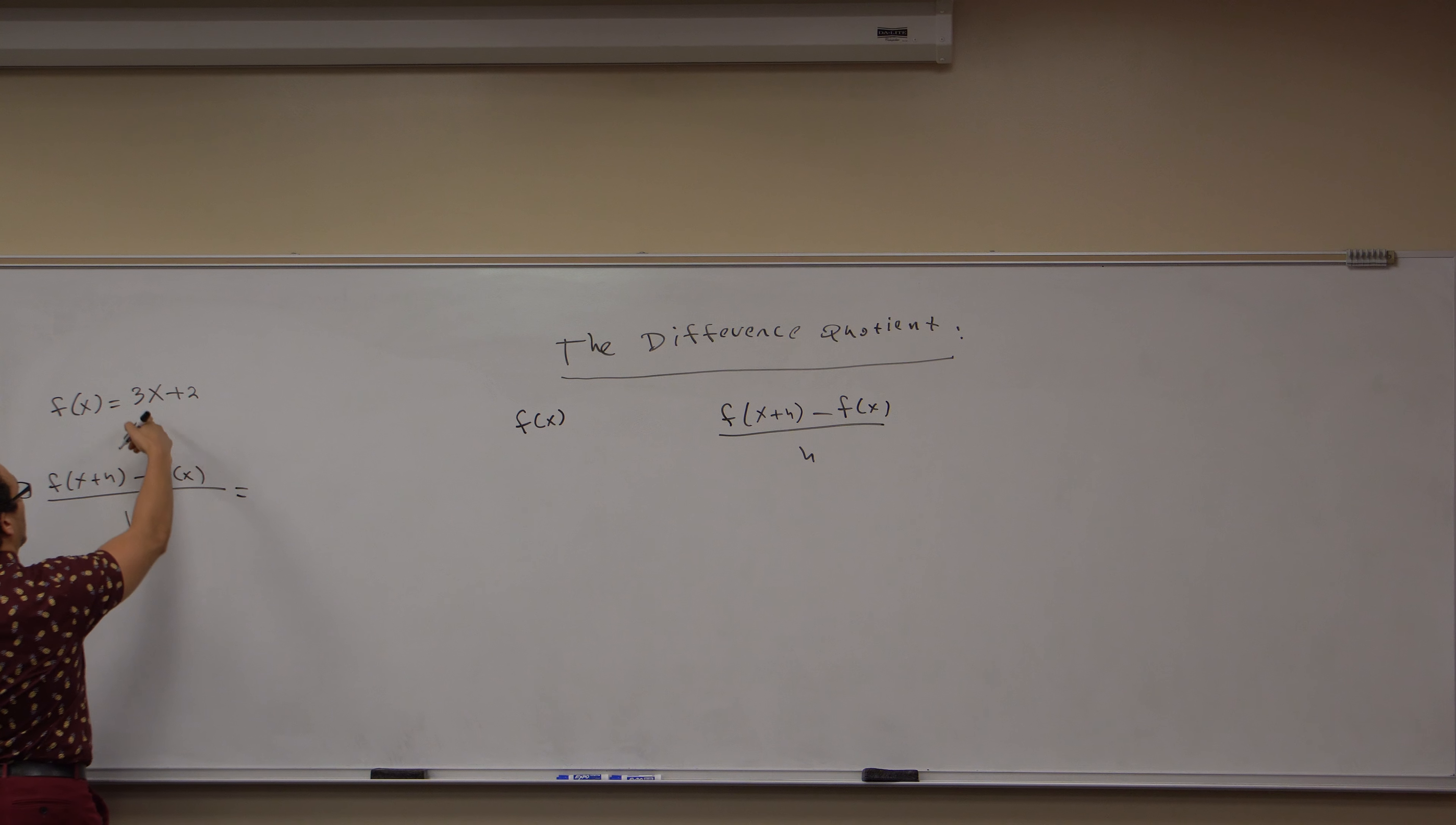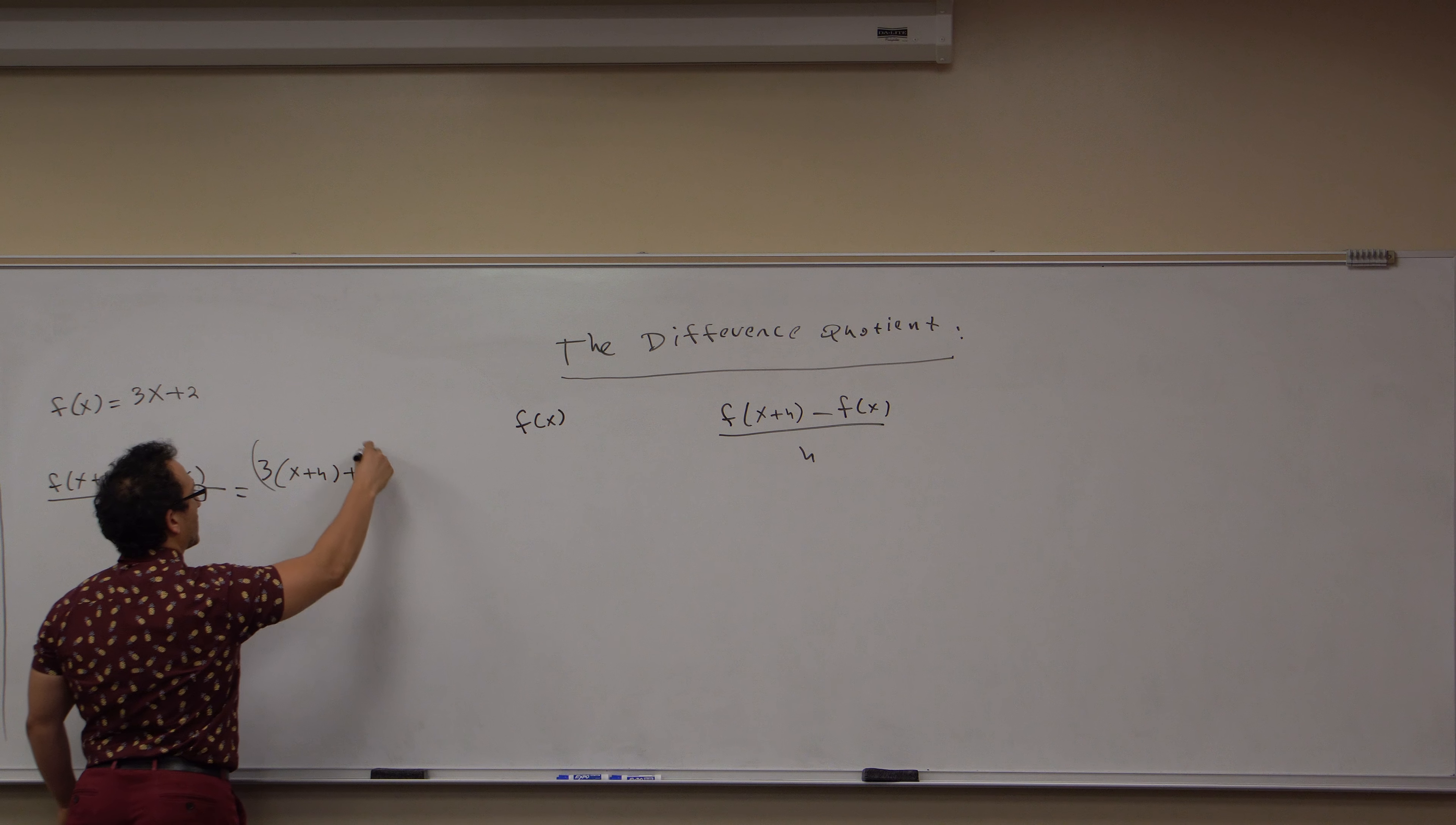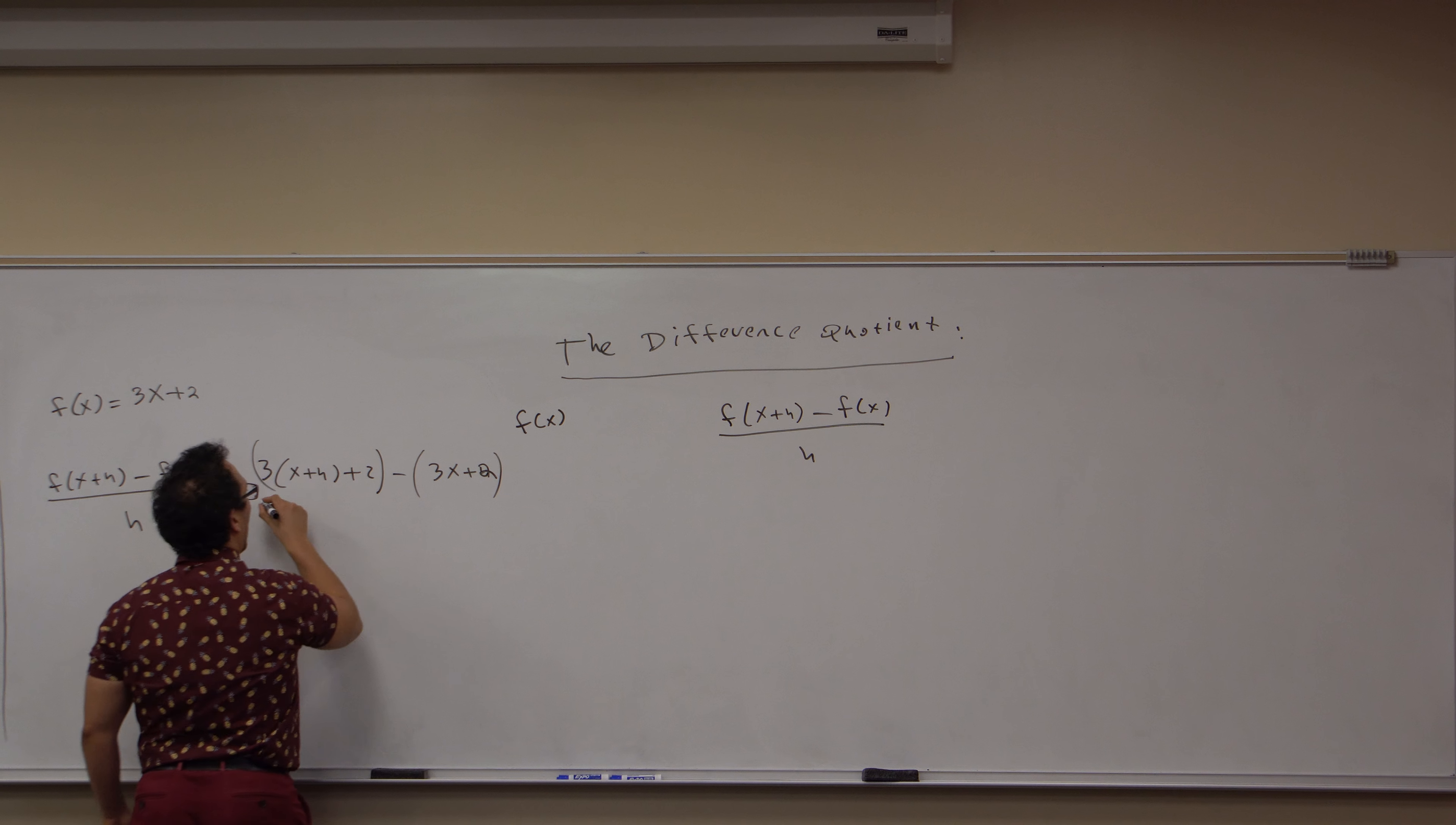Notice that when I plug in x plus h for every x I see here, I get 3 times the quantity x plus h plus 2, minus what f of x was, 3x plus 2, and then all over h.